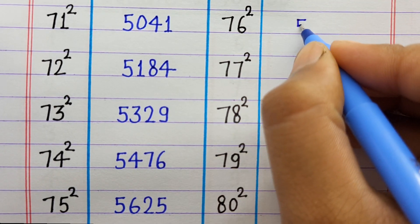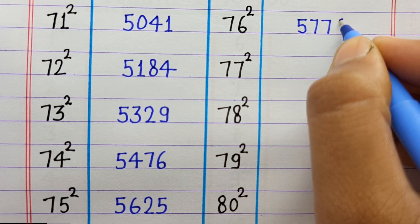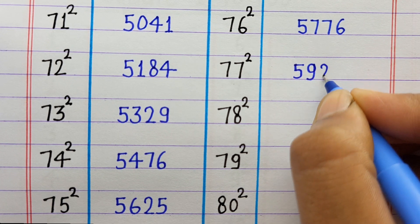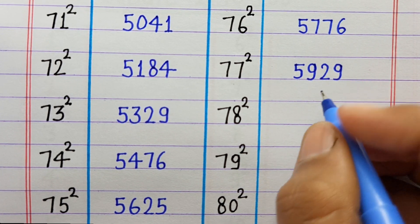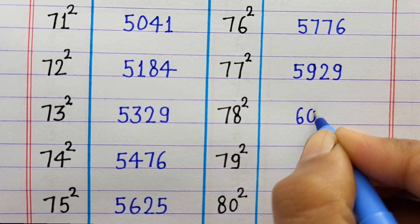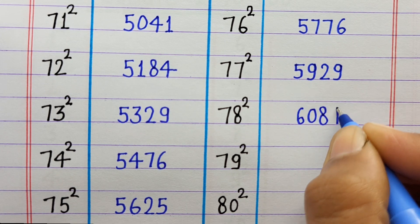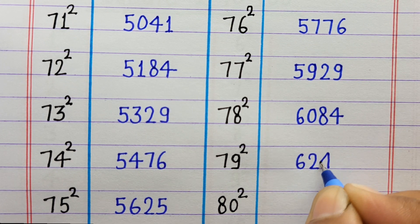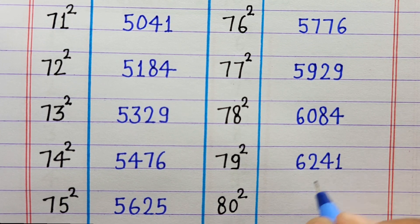76 ka square 5776, 77 ka square 5929, 78 ka square 6084, 79 ka square 6241.